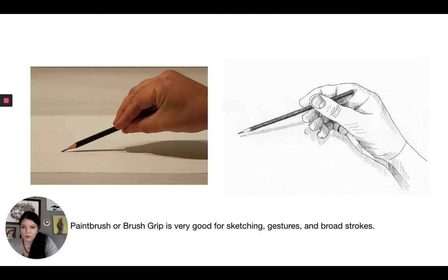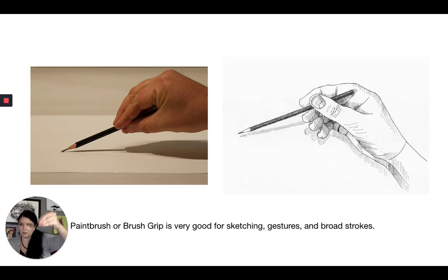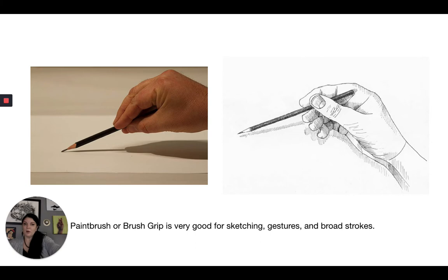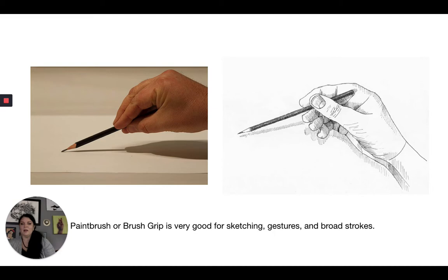The next one is paintbrush grip — sometimes called brush grip or drumstick grip. It's called paintbrush grip because this is how we tend to hold a paintbrush. You can use your whole arm with this grip, or flip it to get a bit more control and move from your wrist or elbow — it's very versatile. It's probably the grip I personally use most when I'm drawing, so this is a good one to work on and try out.